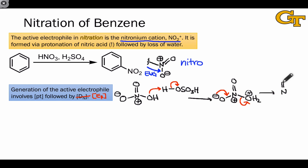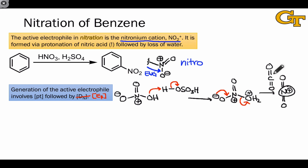It's worth taking a brief look at the structure of the nitronium cation. NO2+ is isoelectronic with CO2 — the only difference between these two molecules is the presence of an additional proton in NO2+ relative to CO2. That turns out to be a significant difference in their strength as electrophiles. While CO2 can act as an electrophile, NO2+ is much, much stronger as an electrophile.